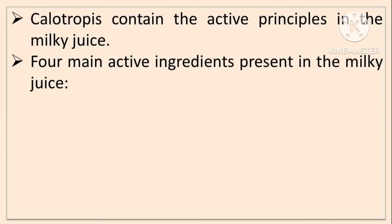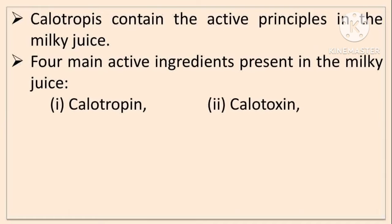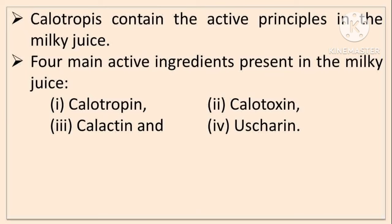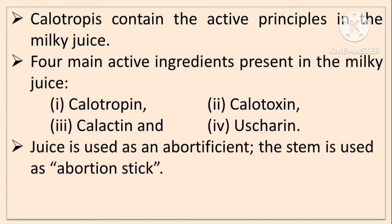The four main active principles are Calotropin, Calotoxin, Calactin, and Uscharin. The milky juice of Calotropis contains these four active ingredients. The juice is used as an abortifacient, and the stem is used as an abortion stick. This is its medico-legal use.